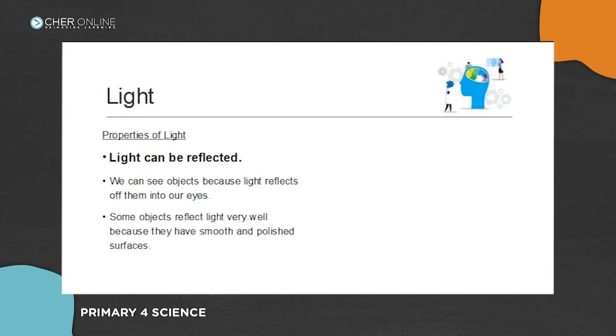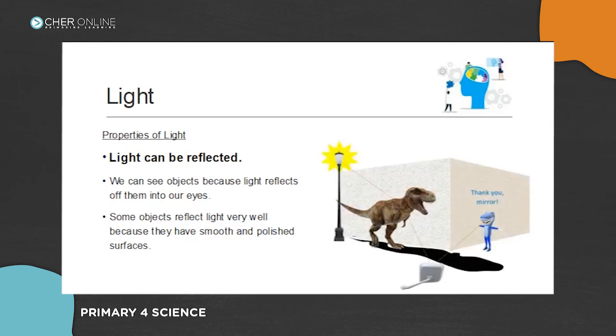So some objects reflect light very well because they have smooth and polished surfaces. So if this little boy in a small blue dinosaur costume, if there's a mirror here, the image of this big dinosaur will be onto this mirror, and the mirror will reflect the light into this little boy's eyes. This little dinosaur will be able to see the big dinosaur. So can you see the path of light?